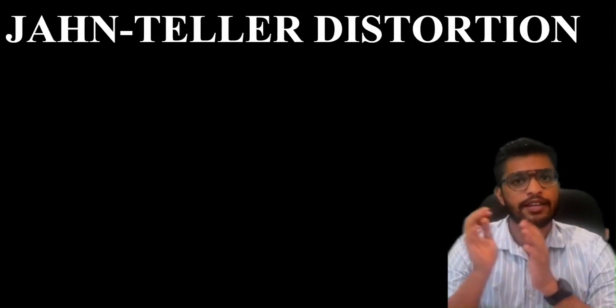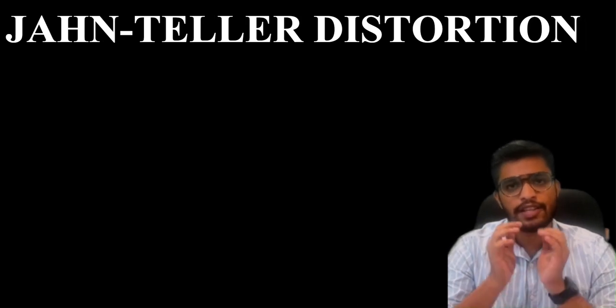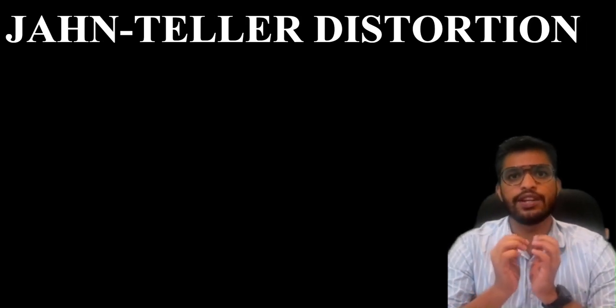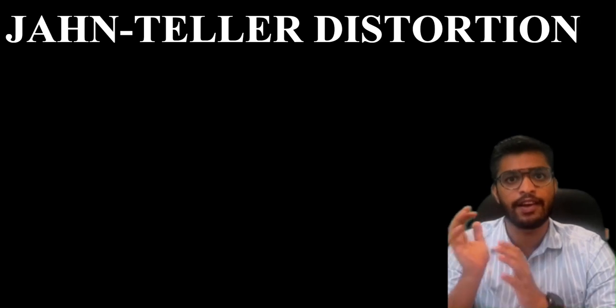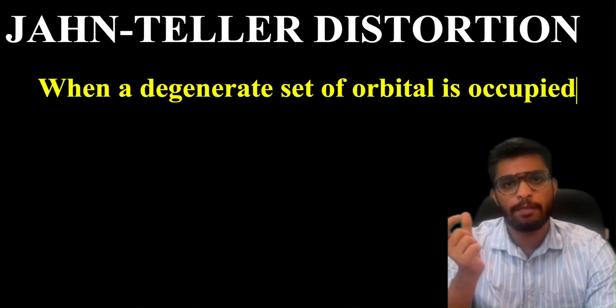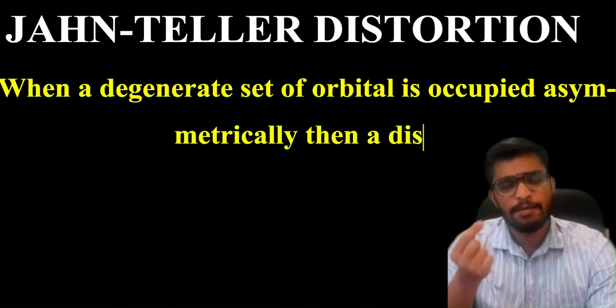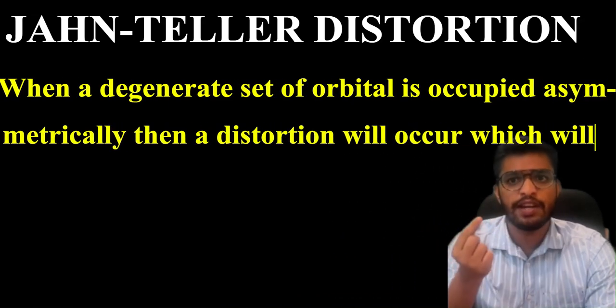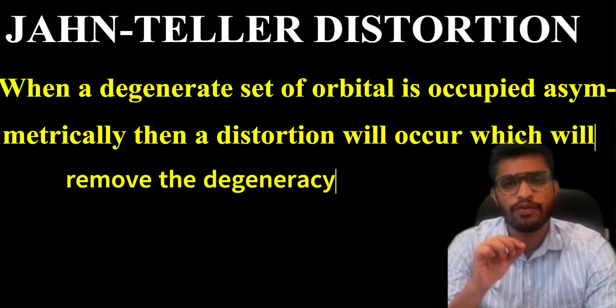Hi everyone, welcome to Thomia Classes. Jahn-Teller distortion. So what is actually Jahn-Teller distortion or Jahn-Teller effect? When a degenerate set of orbitals is occupied asymmetrically, then a distortion will occur which will remove the degeneracy of the orbitals.